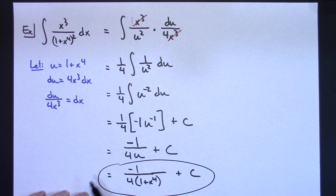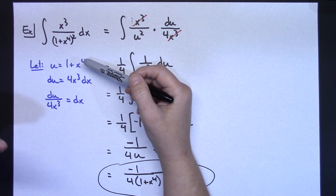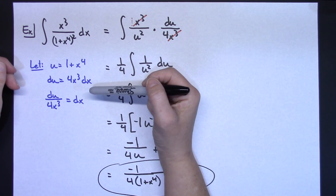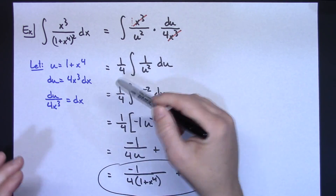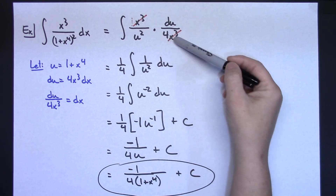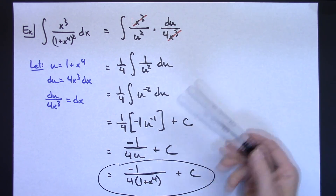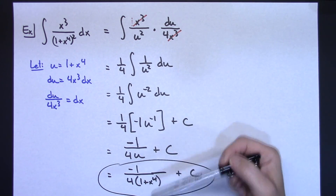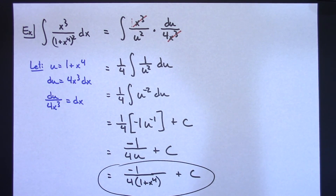So three examples there of using a u substitution. Making sure that when you pick your u, at least for that first choice, always pick the inside part of the composite function that you're seeing. Go ahead and solve all the way down for dx to make your substitutions easier. As long as you cross out all of your x's and get down to an integral problem of all u's, then you've made the right choice on what you picked your u to be, and your integration from there should be straightforward. Thanks for watching, and don't forget to subscribe to the channel.